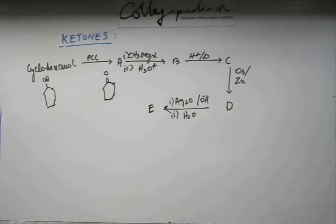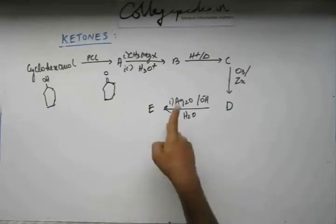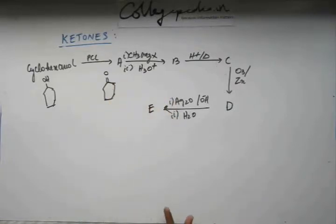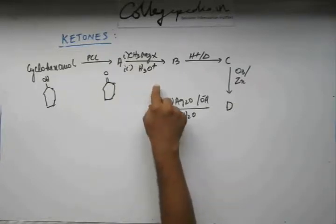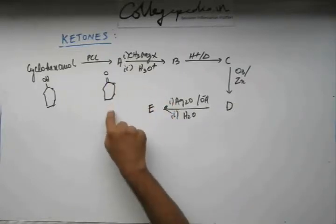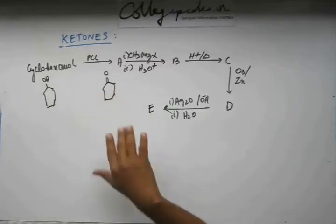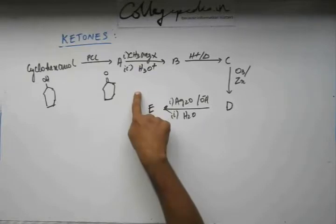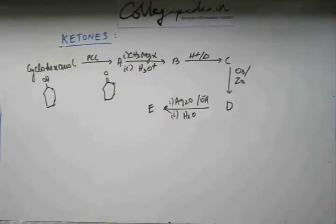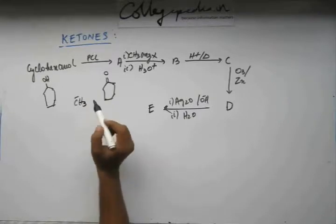Now you have a Grignard reagent. This Grignard reagent attacks on ketone to give you alcohol. We studied this reaction when we studied Grignard reagent. We will study this reaction once again when we study the reactions of ketones. We haven't begun with the reactions of ketone but this is a pretty simple one. So I added this, I don't think it will be a problem for you to identify what B would be.